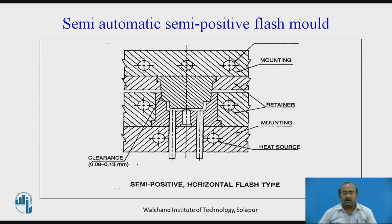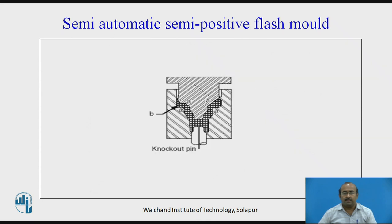The semi-automatic semi-positive flash mold is shown here — the flash flows both horizontally and vertically. Another diagram also shows the semi-automatic semi-positive flash mold.